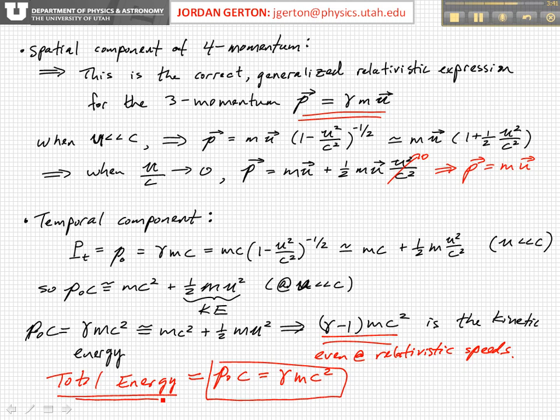That's a really handy expression. Directly from the four momentum, we get the total energy of a particle. Actually, this is not invariant, which you can see because it depends on gamma, which depends on the velocity. So this is not invariant, but it gives you the total energy of a particle at any velocity.